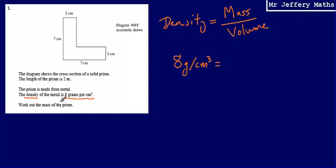We're asked to work out the mass, but in order to do that we're also going to need to work out the volume, and we've got enough information in the question to do that. To work out the volume of this shape, I'm going to need to work out the area of the cross-section of the prism and then multiply that by the length. To work out the volume of a solid prism, we multiply the area of the cross-section by the length.